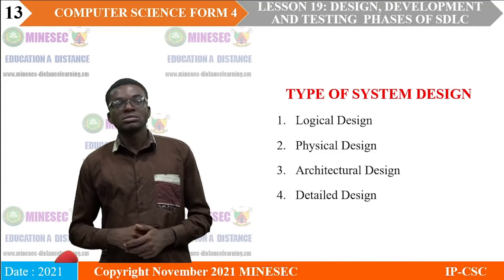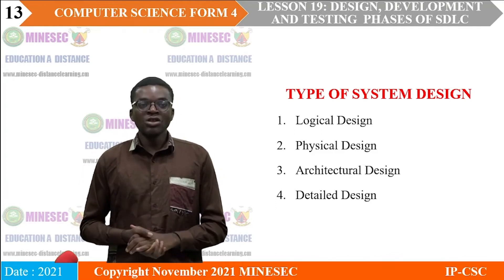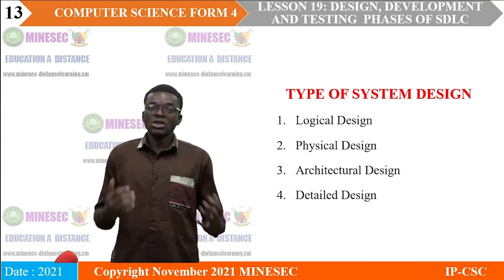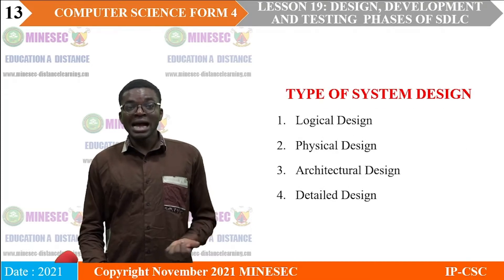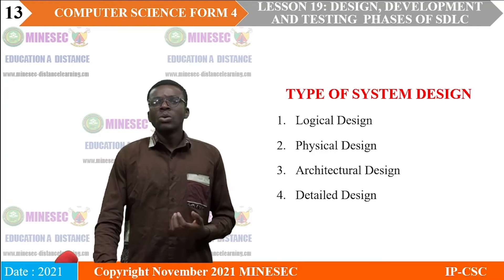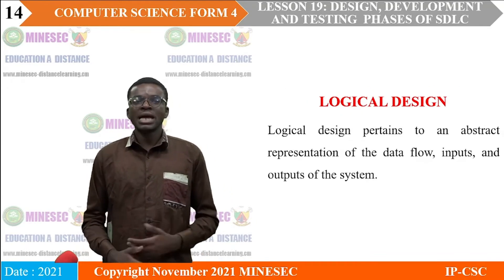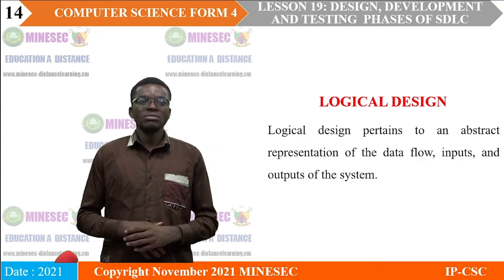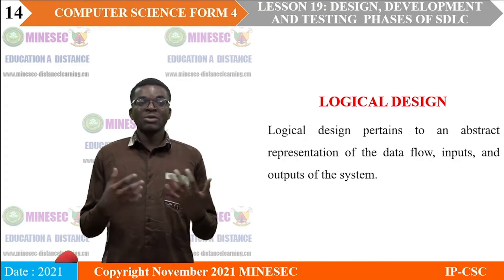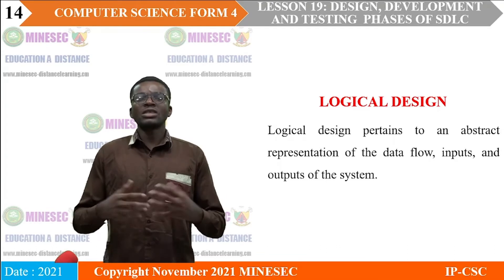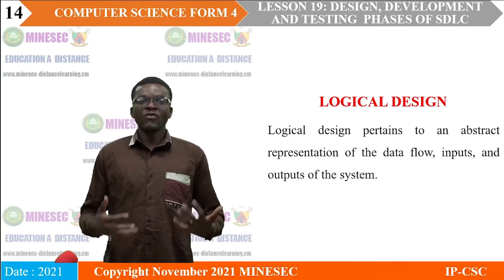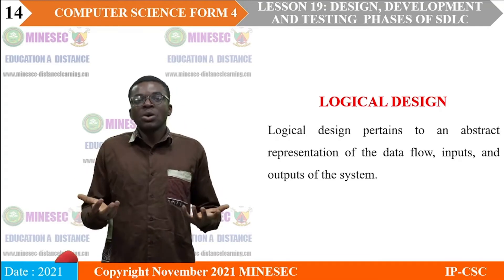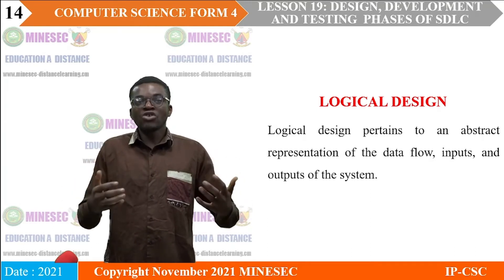There are four types of system design: logical design, physical design, architectural design, and detailed design. Logical design pertains to an abstract representation of the data flow, input, and output of the system — it captures the logic of how the system will function. Physical design relates to the actual input and output processes, focusing on how data is entered, verified, processed, and displayed as output.